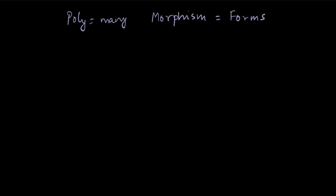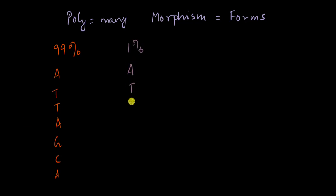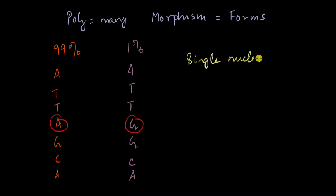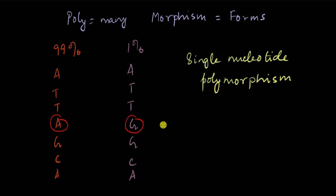Let's take an example. Let's say we have one DNA sequence present in 99% of the population: A-T-T-A-G-C-A. In the remaining one percent we have: A-T-T-G-G-C-A. Only one nucleotide is different and the rest is the same. This type of polymorphism is called Single Nucleotide Polymorphism, or SNP — the variation is in one base, which is part of one nucleotide.